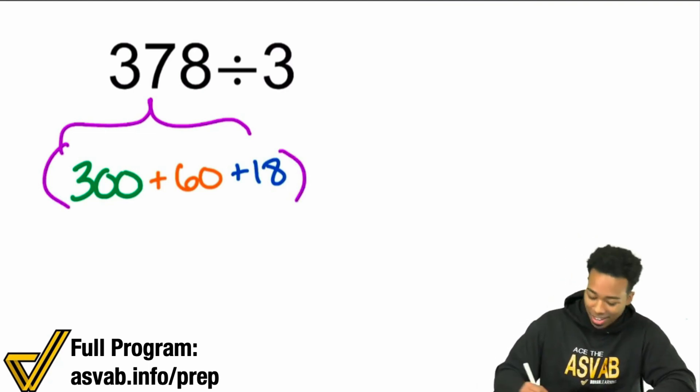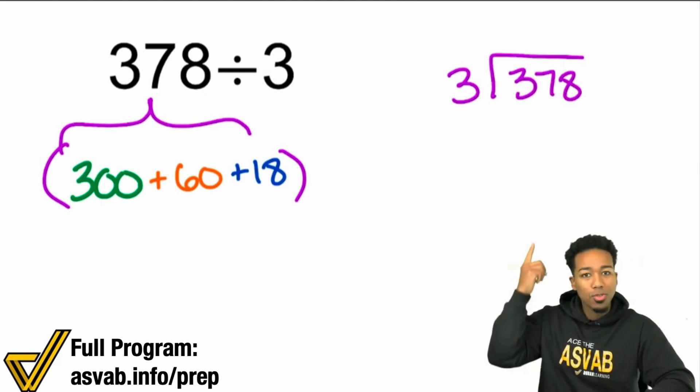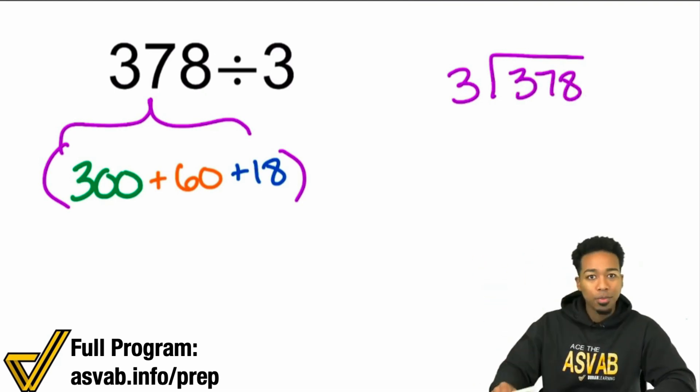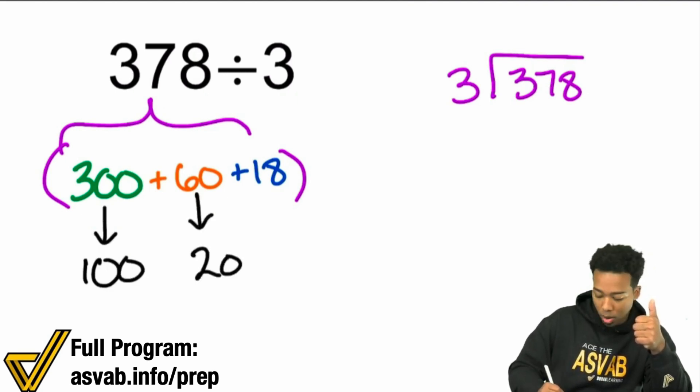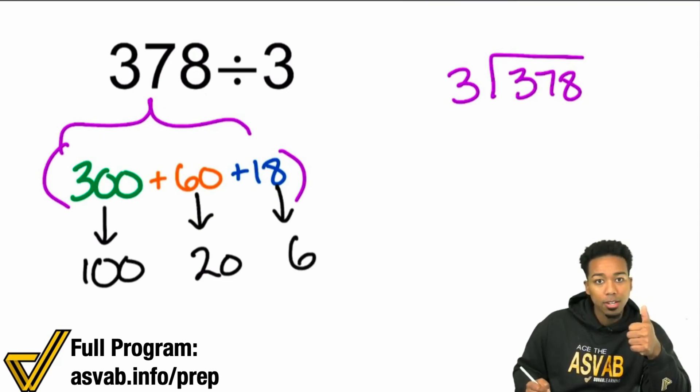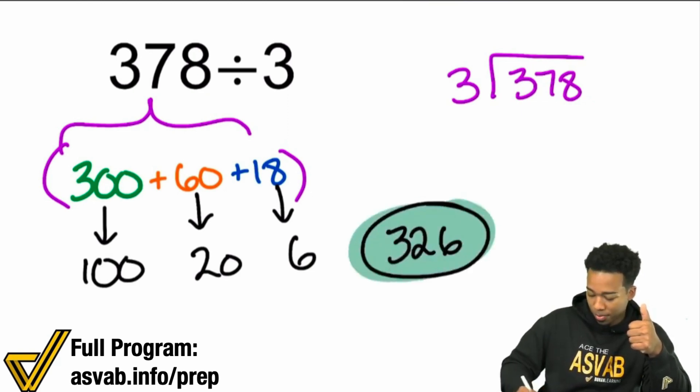And I can do this in my head before anybody else can do this. Why would you want to do that when you can just do that in your head? 300 divided by 3, 100. 60 divided by 3, 20. 18 divided by 3, 6. 326. Done. And there's my answer.